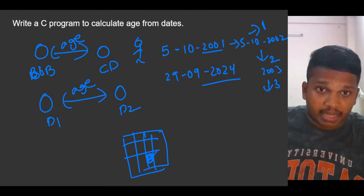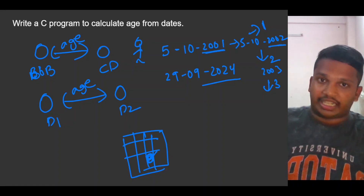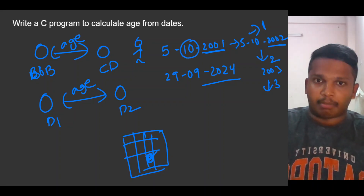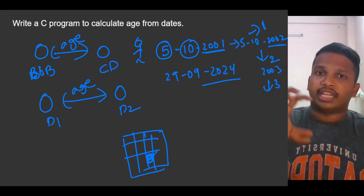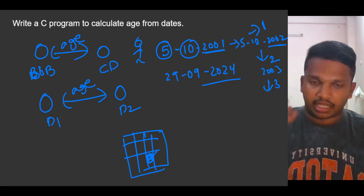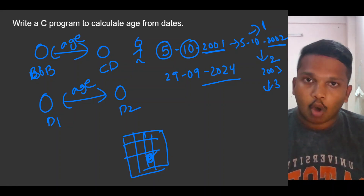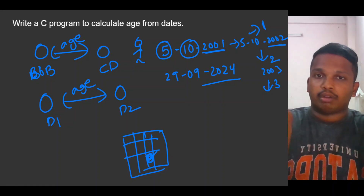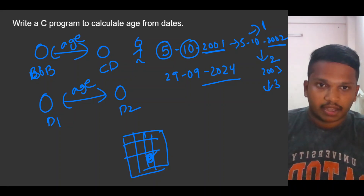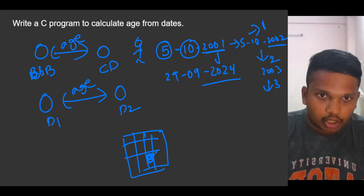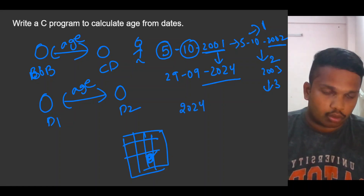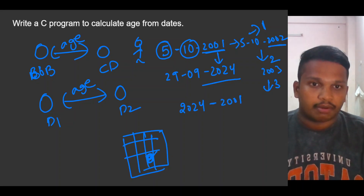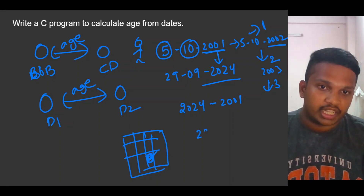But by seeing only the year, we cannot tell the age. By considering the month and by considering the date, we need to tell the age. For example, if you are given with two dates, from year 2024 minus 2001 you will get 23.